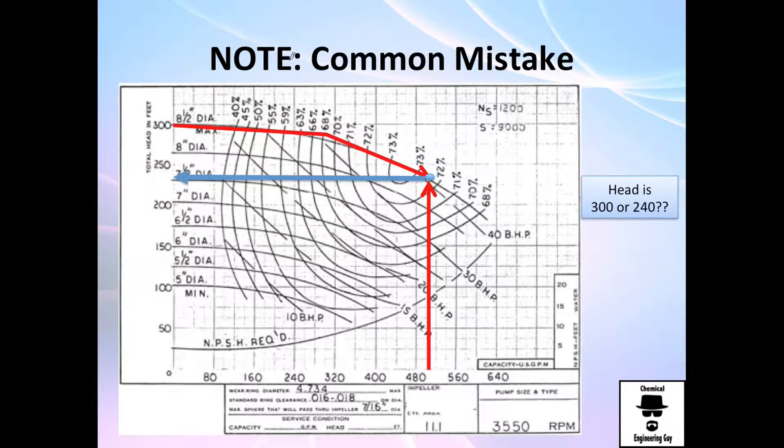I want to show you the common mistakes people do when using this diagram. So one day I was asked: if this is the volumetric flow rate and I'm using an impeller of eight and a half inches, or maybe I'm working at 72.5% efficiency, what is the head of my system? And it should be very obvious guys that you need to do a vertical line to the left.